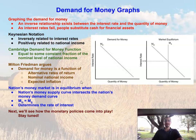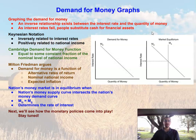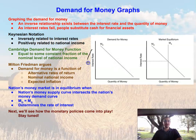Now we can actually graph this demand for money. What we find is that there is an inverse relationship between the interest rate and the demand for money. As interest rates go up, the opportunity cost of holding cash goes up, so we take money out of cash and place it into investments. Whereas if interest rates are falling, we actually want to hold more cash.